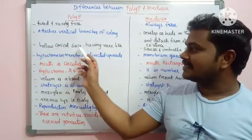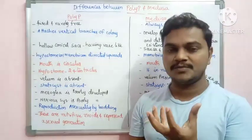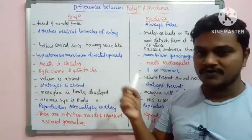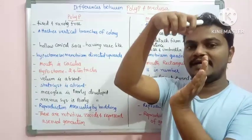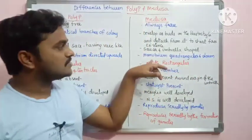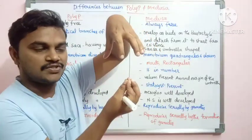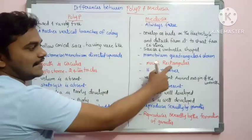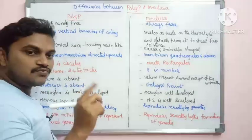Polyp has hollow conical sacs, vase-like or flower-vase shape. Medusa is saucer or umbrella-shaped. The hypostome or manubrium is directed upwards in the polyp. In the case of medusa, the manubrium is quadrangular and directed downwards.